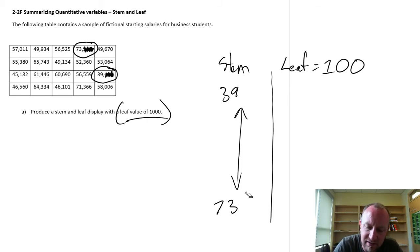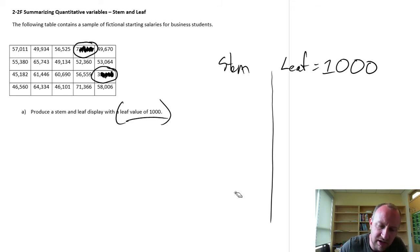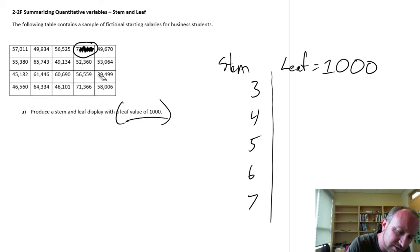Now what this exercise is asking us to do is to scale this further still so that our leaf values are a thousand, which means that our stems now range from only 3 to 7. So let me just write these down. I'm gonna go from 3, 4, 5, 6, and 7. Okay, so here we've got our stems.